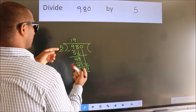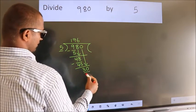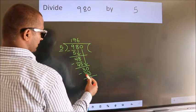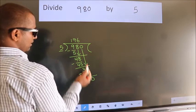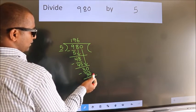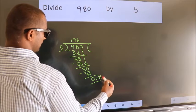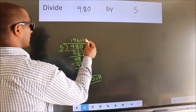Now we subtract, we get 0. No more numbers to bring it down, so we stop here. This is our remainder. This is our quotient.